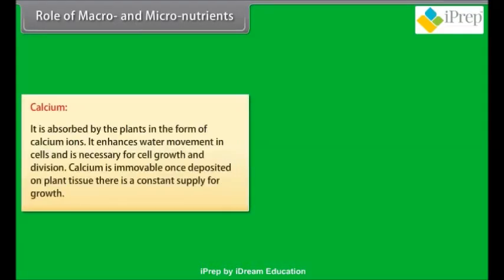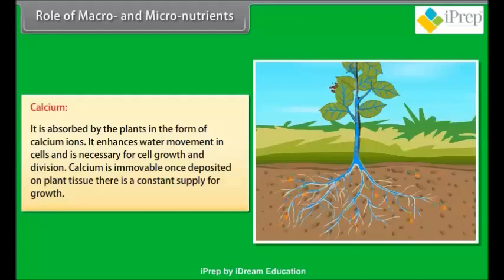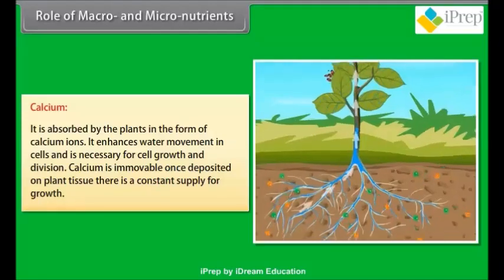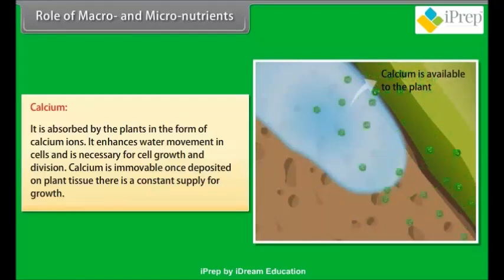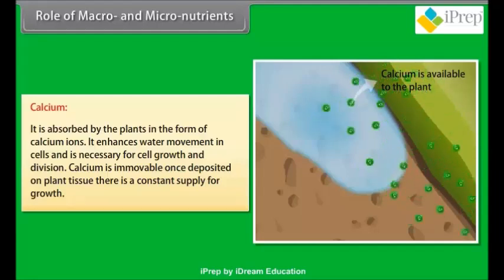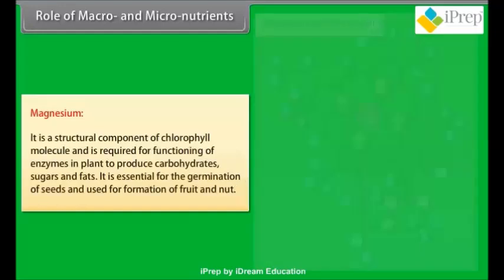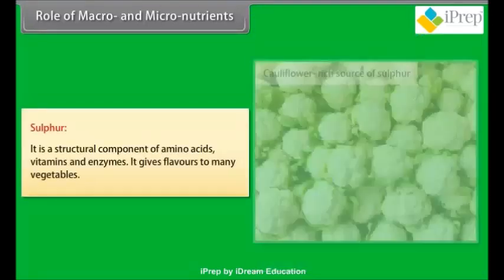Calcium: it is absorbed by plants in the form of calcium ions. It enhances water movement in cells and is necessary for cell growth and division. Calcium is immovable — once deposited on plant tissue, there is a constant supply for growth. Magnesium: it is a structural component of the chlorophyll molecule and is required for functioning of enzymes to produce carbohydrates, sugars, and fats. It is essential for germination of seeds and used for formation of fruit and nut. Sulfur: it is a structural component of amino acids, vitamins, and enzymes, and gives flavor to many vegetables.